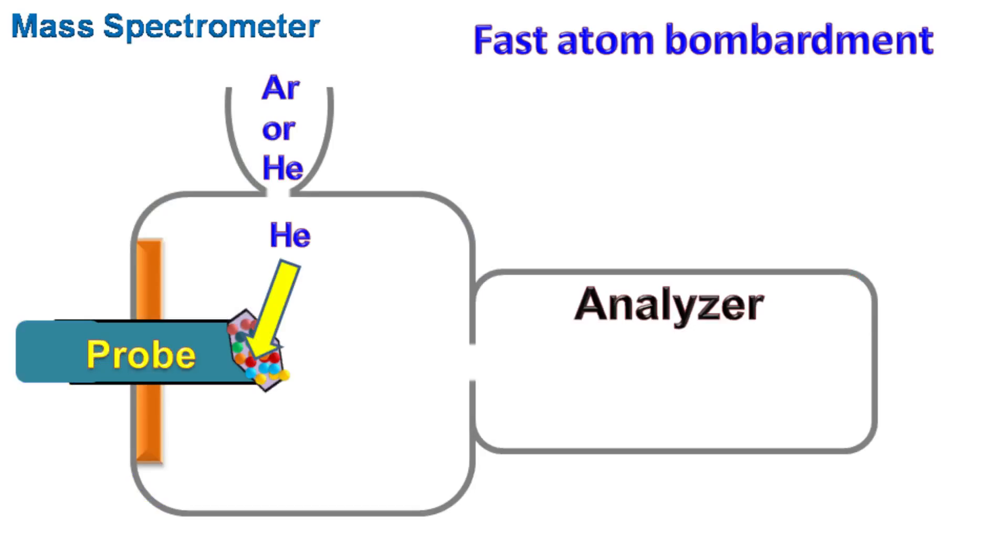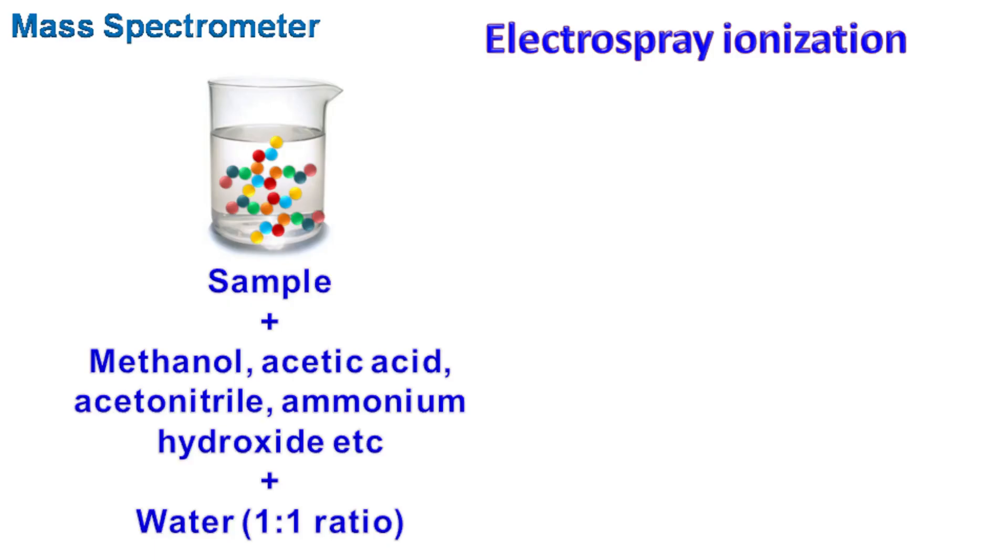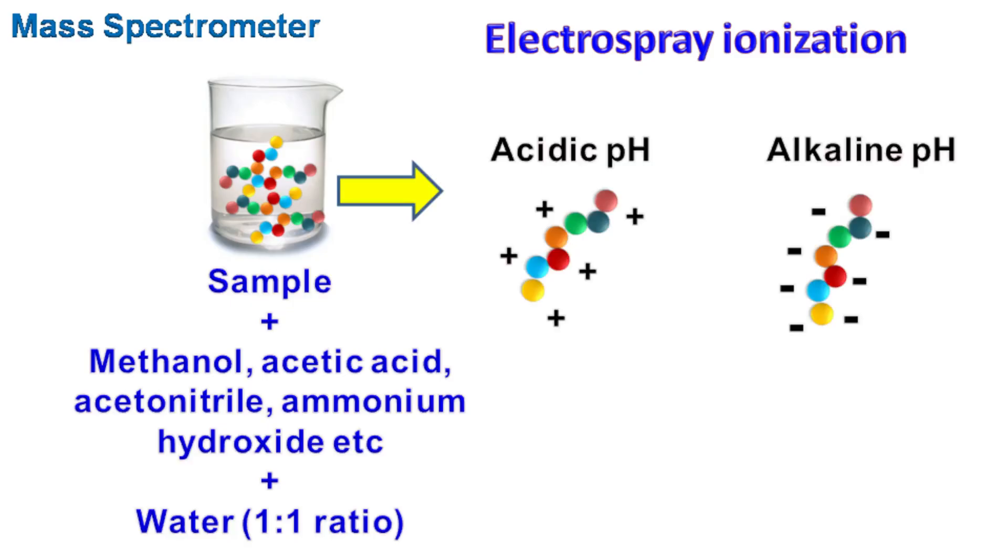Electrospray ionization: In this method, solution of sample molecules is spread in an electric field to produce ions. This method is popular for analysis of biomolecules such as proteins and DNA. The sample molecules can be mixed with solvents such as methanol, acetonitrile, acetic acid, formic acid, ammonium hydroxide, etc. along with water in one-to-one ratio. Depending on the pH of solution, the sample molecules can either have positive or negative charge.